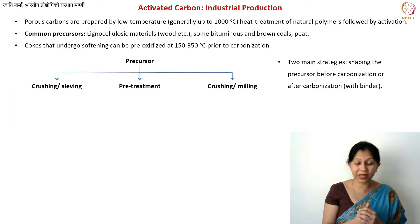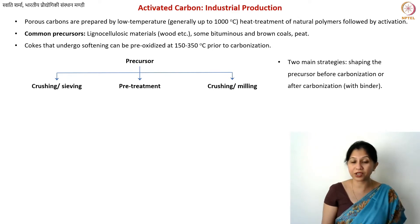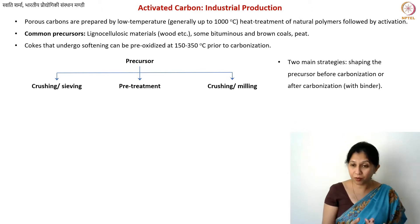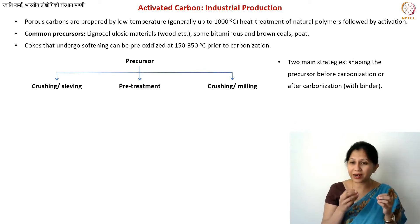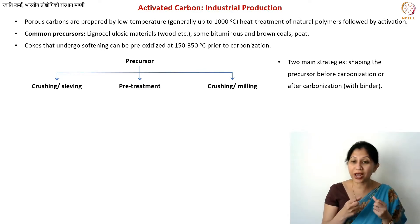In the case of chemical activation, you pre-treat your precursor. In the case of physical activation, you don't. For chemical activation, the pre-treatment already degrades your cellulose to some extent, which makes it easier to shape. These are three pathways you use in the beginning.